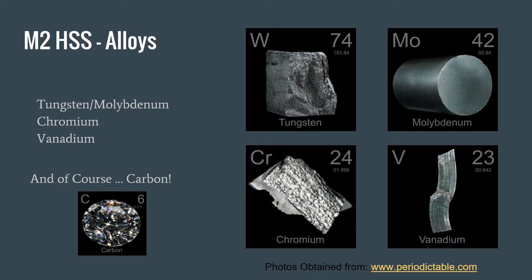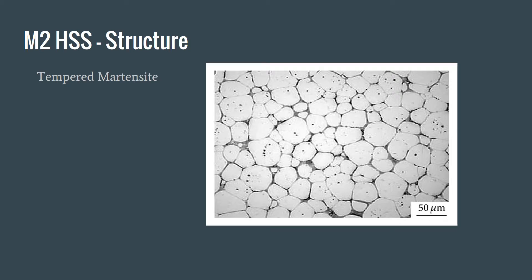Much like the requirements are changing for cutting tools, the materials used to alloy high speed steels also change. M2 has the microstructure of tempered martensite. The alloys slow the formation rate of pearlite and bainite, and tempered martensite consists of the equilibrium ferrite and cementite phases.